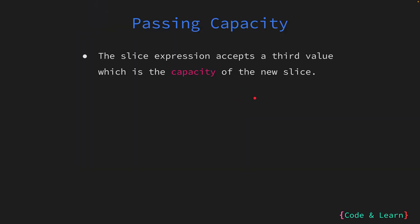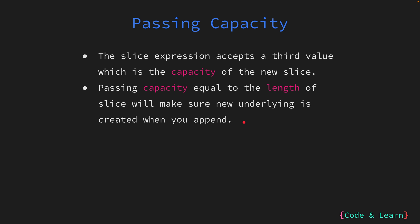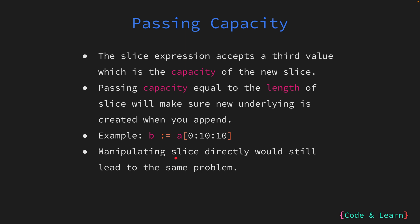There is another way to force Go to create a new array when you append to a slice created from a slice expression. The slice expression accepts a third value separated by a colon, which sets the capacity of the new slice. If you pass the capacity equal to the length of the new slice, you get the same behavior as slice 3 — Go will create a new underlying array and copy values from the older array. Please note that direct manipulation by index before Go creates the new array will still be reflected in the source slice.